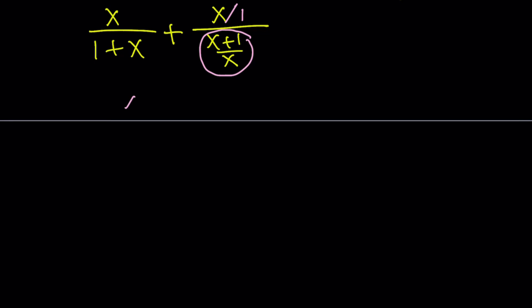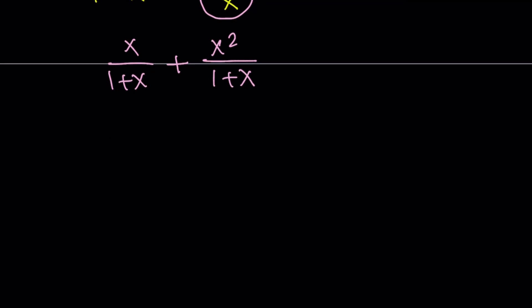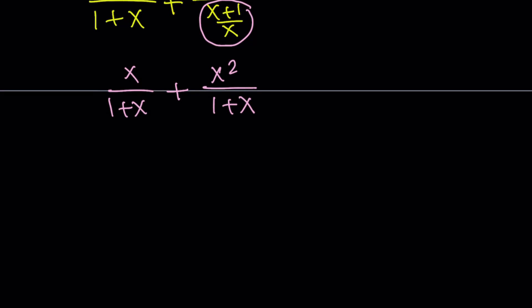So we can write this as x over 1 plus x plus. Now when you flip this, you're going to get x times x which is x squared. And the bottom is going to be x plus 1. But I can write it as 1 plus x obviously, right? Okay, great. So how do you solve this one?